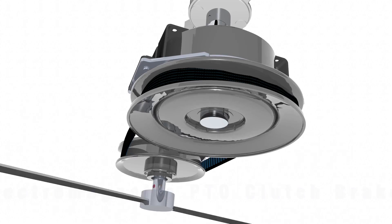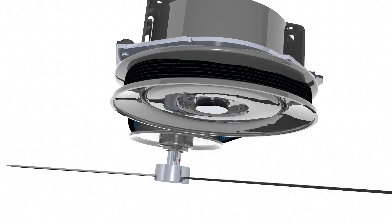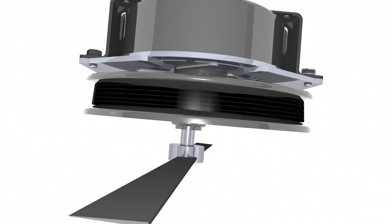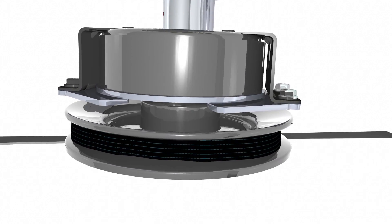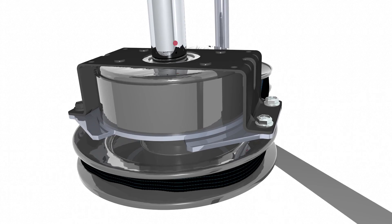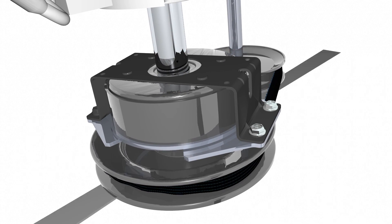Electromagnetic PTO clutch brakes are primarily used in the outdoor power equipment industry to start the rotation of an implement like a cutting blade and also help to slow the implement when the clutch is turned off.